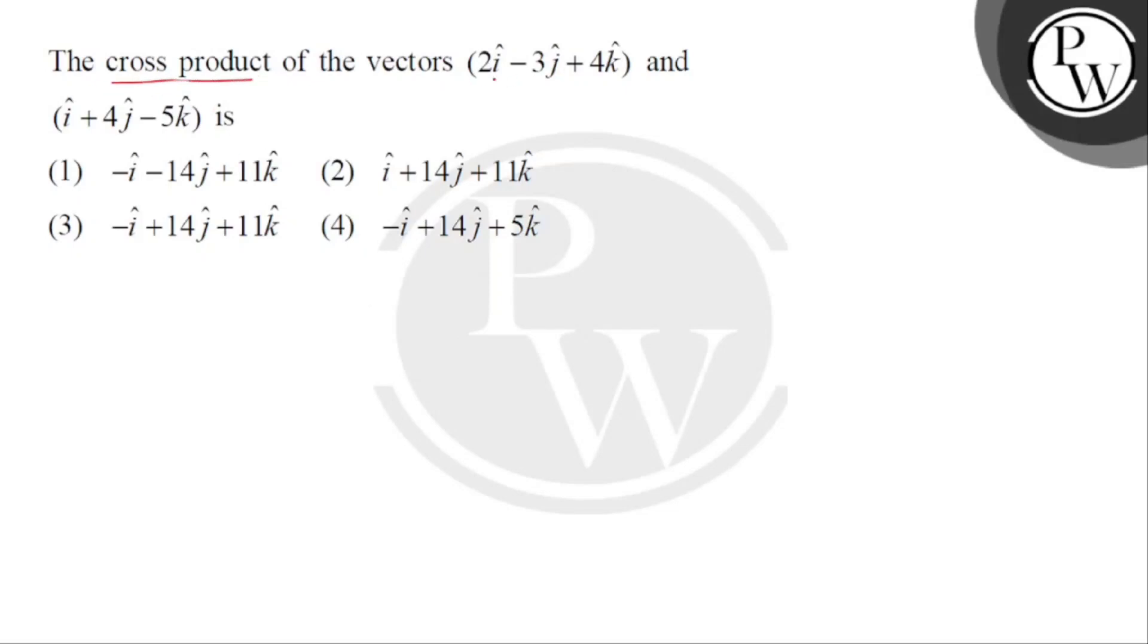The cross product of the vectors 2i cap minus 3j cap plus 4k cap and i cap plus 4j cap minus 5k cap is.